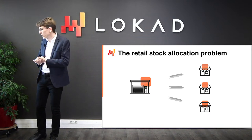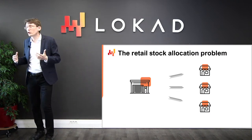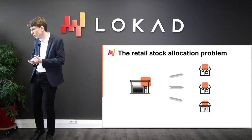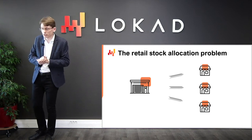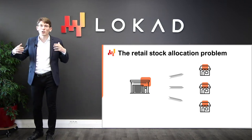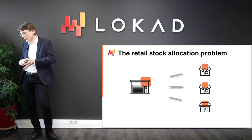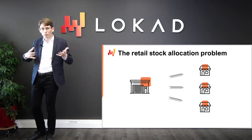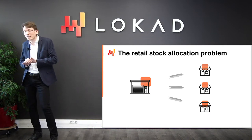In the retail stock allocation problem — and this is a definition I'm giving, somewhat arbitrary — we assume a network with two echelons: a distribution center and multiple stores that the DC serves. If you have multiple distribution centers, we assume each store is served by only a single DC. The goal is to properly allocate stock that exists in the distribution center into the stores, where all stores compete for the same DC stock. We assume all stores can be replenished on a daily basis from the DC. Thus, every day we must decide how many units to move for every product toward each store, and the total units moved cannot exceed what is in stock at the DC.